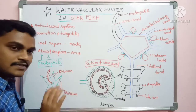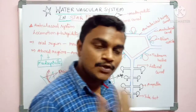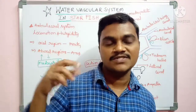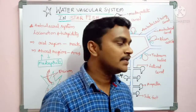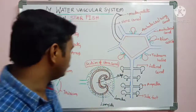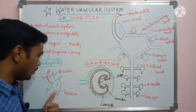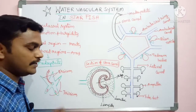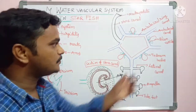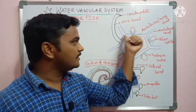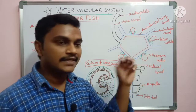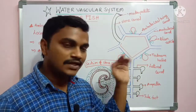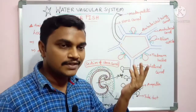A starfish has five arms, and every arm contains some grooves called ambulacral grooves. That is why this system is called the ambulacral system. The starfish contains a central disc, and the aboral region is also present.